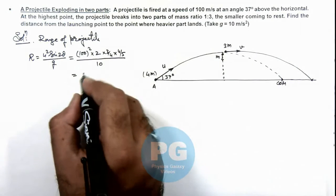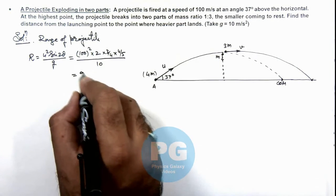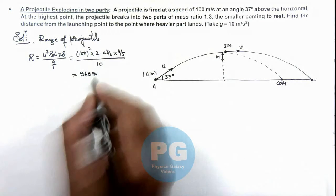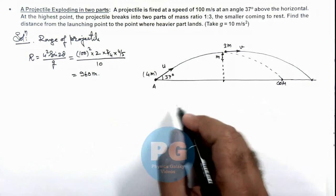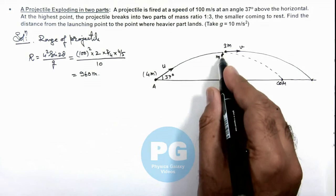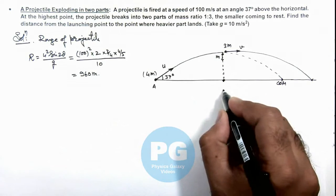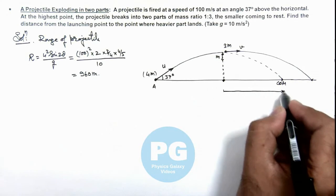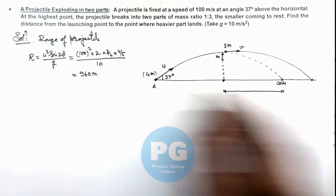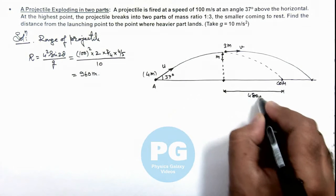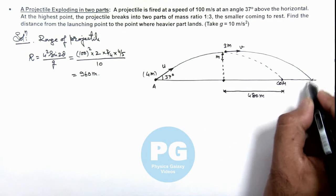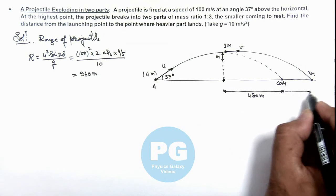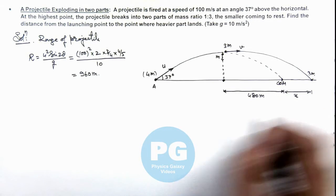On calculating this, we are getting the value to be 960 meters. That means with respect to the position where this lighter part lands, center of mass of this projectile will be at a distance R/2 which is 480 meters, and the point where the mass 3m lands is say at a distance x from center of mass.